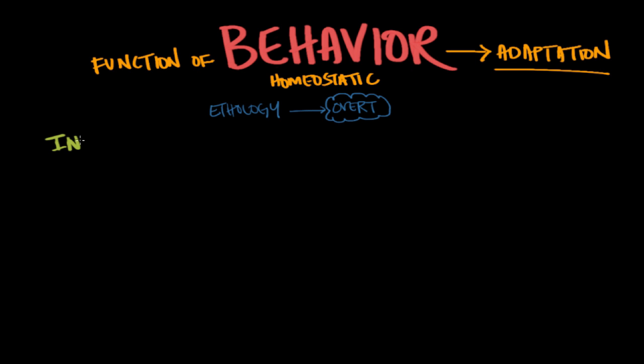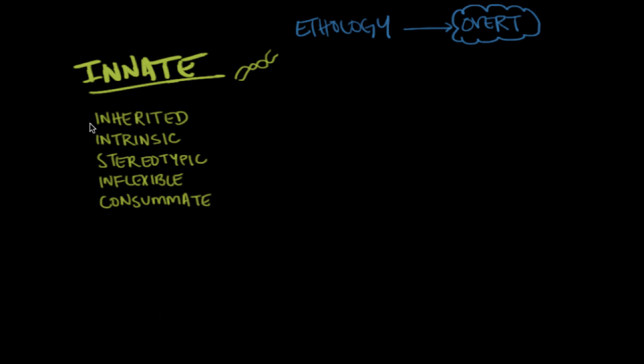First up we have innate behavior. When I say innate behavior, I'm talking about behavior that's genetically programmed. Generally speaking, innate behaviors are going to share some characteristics. To save a little bit of time, mostly so you don't have to watch me write all day, I've gone ahead and pre-written out this list. First up, we have inherited. Innate behaviors are encoded by DNA and they're going to be passed to offspring.